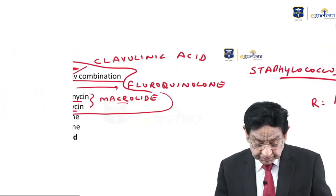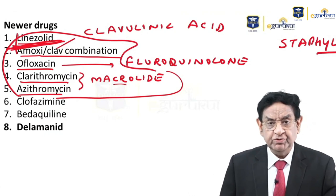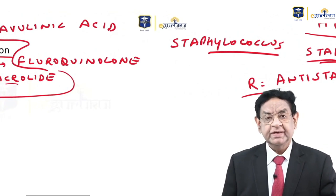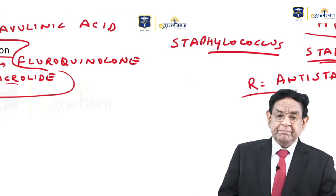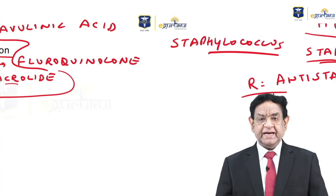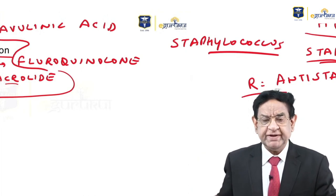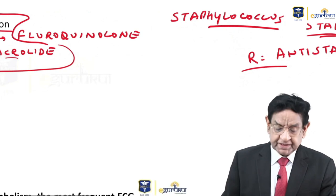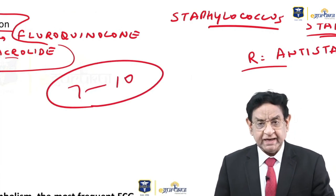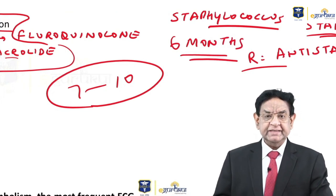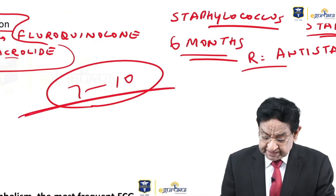There is something common in the microbiology of staphylococci and tuberculosis. Today we treat tuberculosis for six months, but perhaps 20 years from now, research may show that staphylococci and mycobacterium belong to the same family, and treatment of tuberculosis may be just 7 to 10 days, similar to how we treat staph infections now.